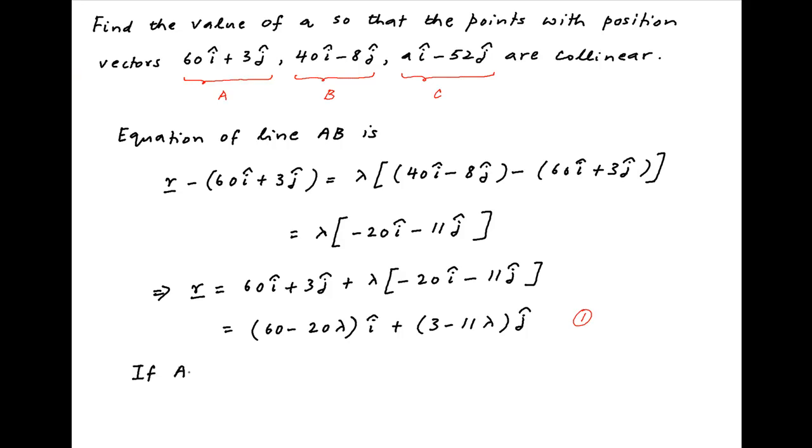Now if the points A, B and C are to be collinear then the point C must satisfy the equation of the line AB given by equation 1.